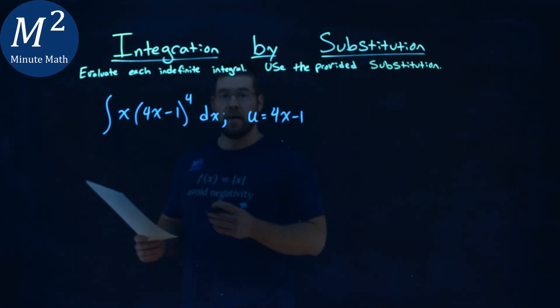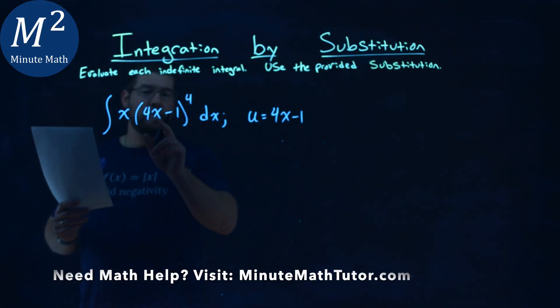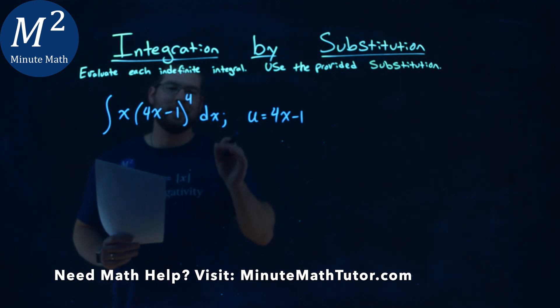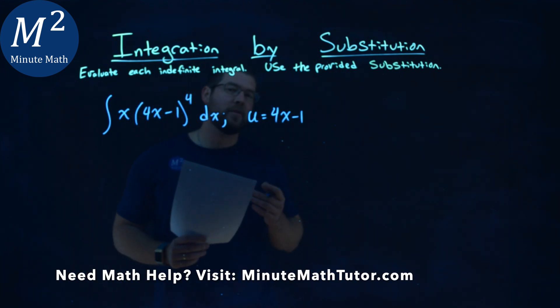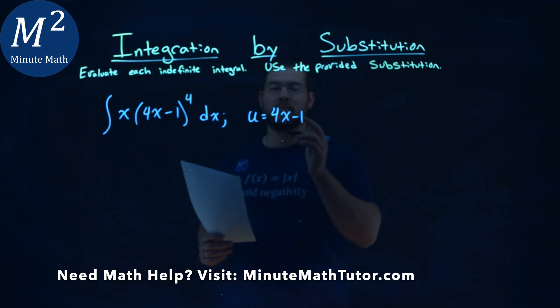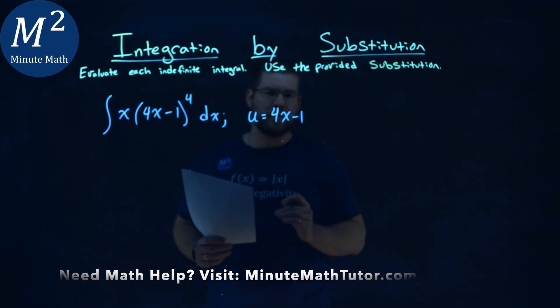We're given this problem right here, the integral of x times 4x minus 1 to the 4th power dx, and we're given a u-value for our u-substitution of 4x minus 1, and we have to evaluate this indefinite integral.